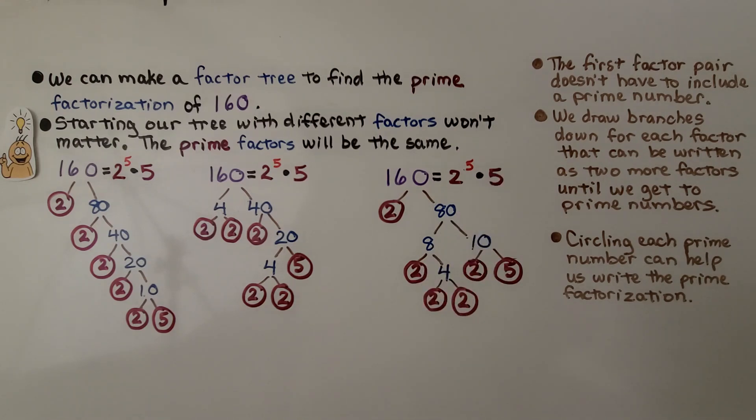We draw branches down for each factor that can be written as 2 more factors until we get to prime numbers. And circling each prime number can help us write the prime factorization. It helps us identify the prime numbers.